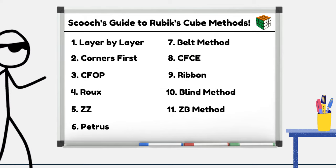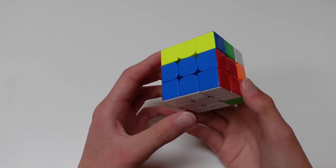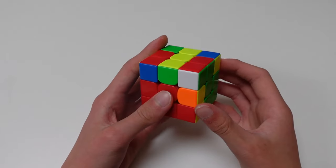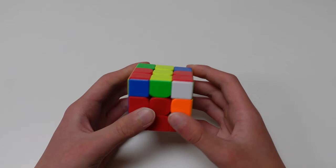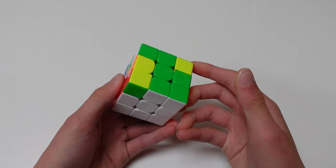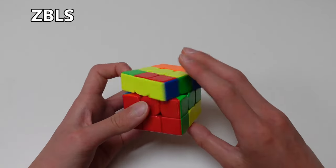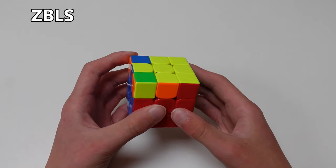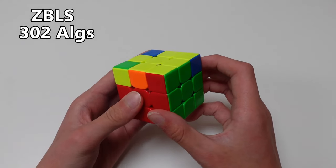Number 11, ZB method. The ZB method is arguably the most advanced method in cubing that people actually use. The first half of the method is the same as CFOP, until you get to the 4th pair of F2L. Here, you do ZBLS, which is solving the pair and also creating a cross on top. Full ZBLS has just over 300 algorithms.